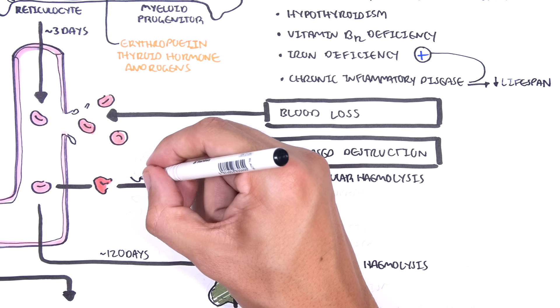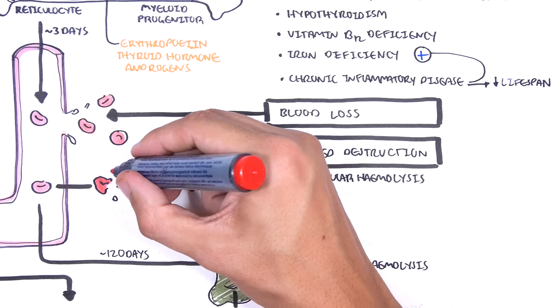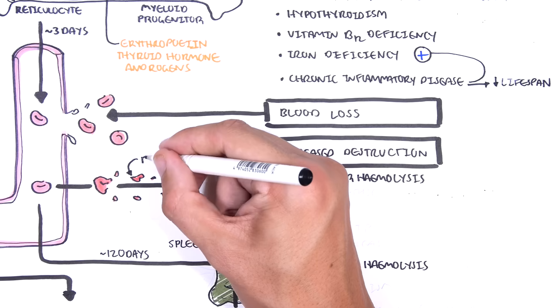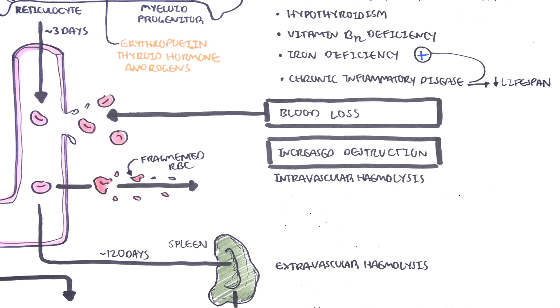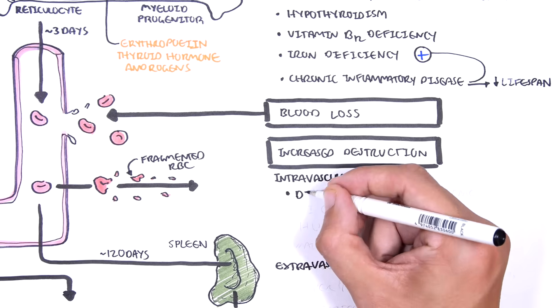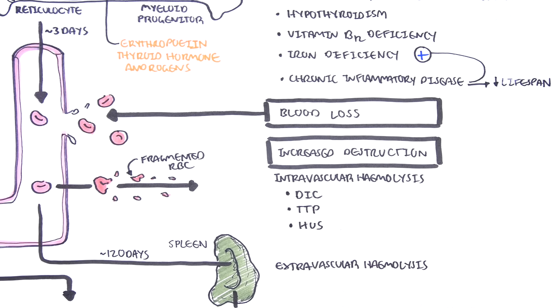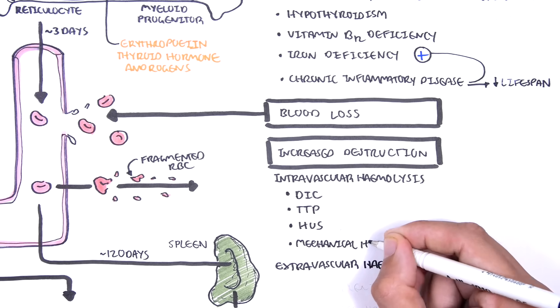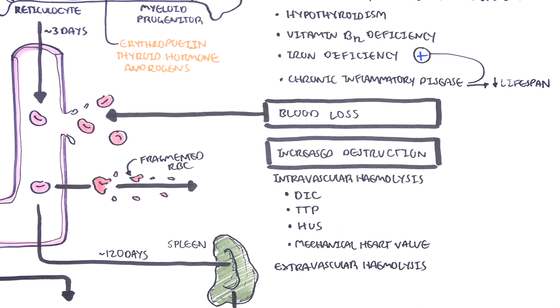Examples of intravascular hemolysis include disseminated intravascular coagulopathy, thrombotic thrombocytopenic purpura, hemolytic uremic syndrome, and mechanical heart valve where the red blood cells die from sheer stress of a mechanical valve in the heart.